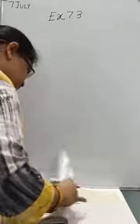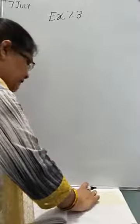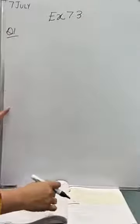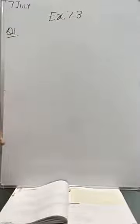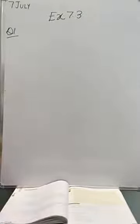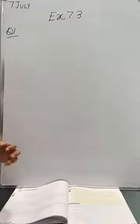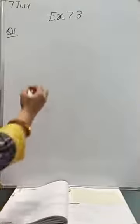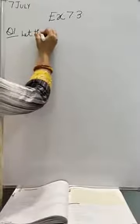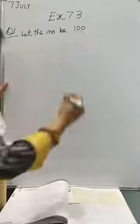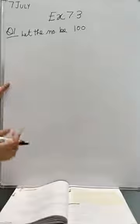Exercise 7.3, question 1: A number is increased by 40% and then decreased by 40%. Find the net increase or decrease percentage. Almost all percentage questions can be solved by the x-method, but an easier method for percentage questions is to assume the number to be 100. When the question is given purely in percentage form, it is better to take 100 — it makes calculations easier.